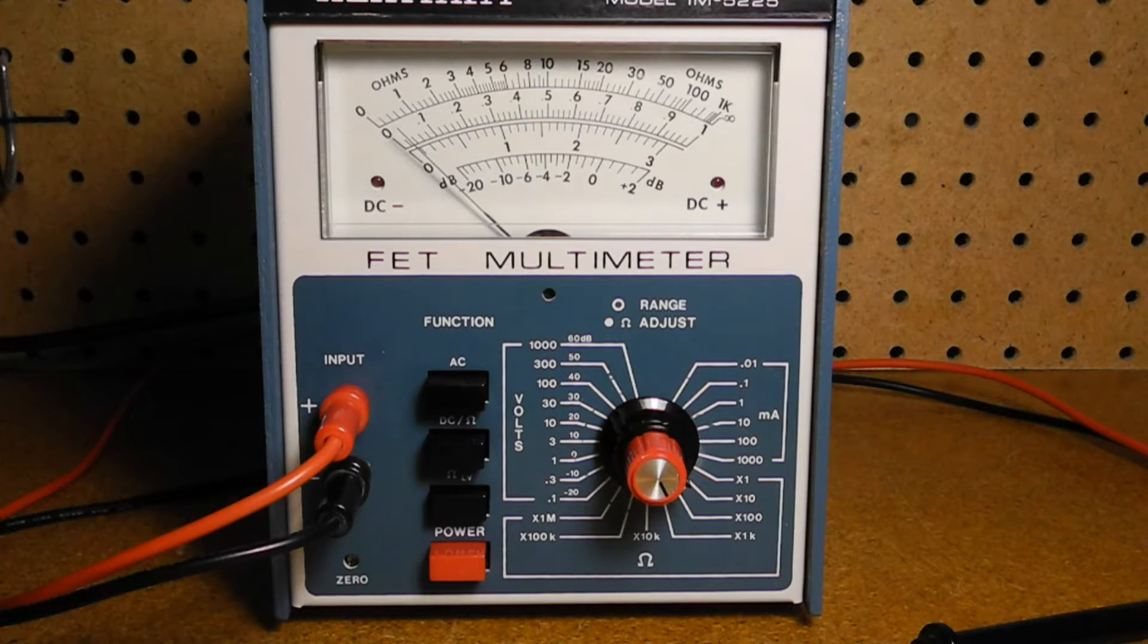There is a low ohms resistance range for testing semiconductors that could be damaged by higher voltages. The unit applies approximately 0.078 volts on the low range and 1.55 on the high, which is high enough to test diode and transistor junctions.